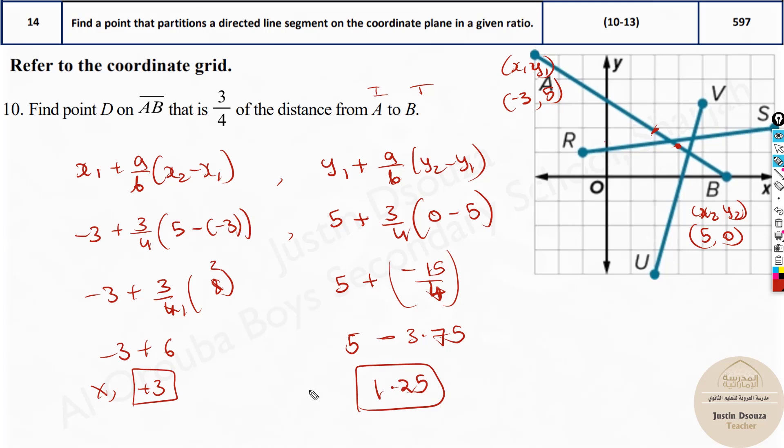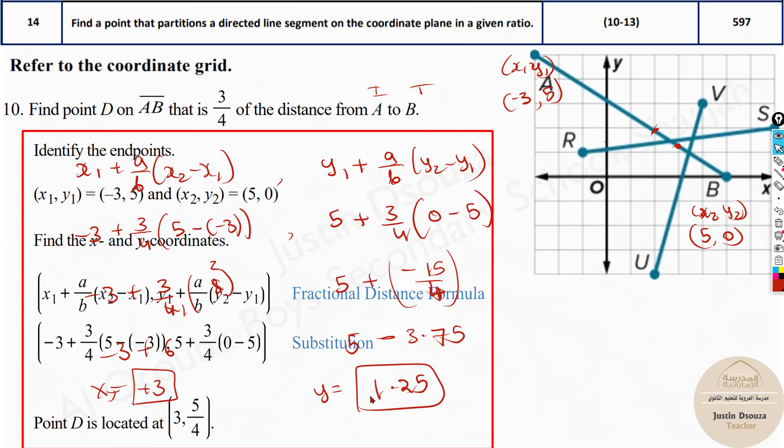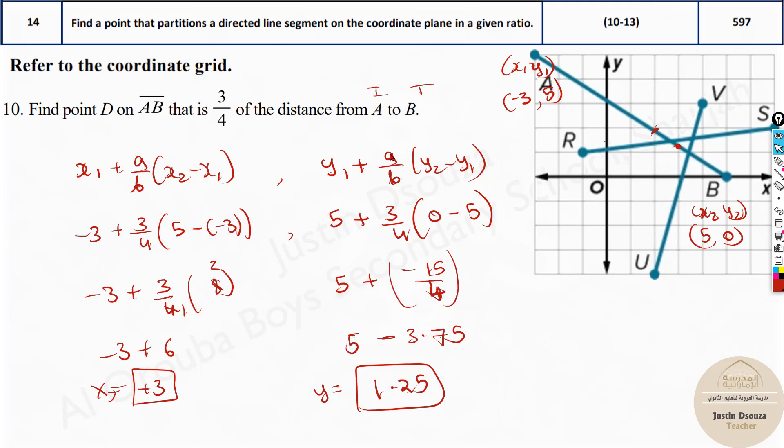This is the X value, that's the Y value. So this is how we solve whenever we get a fractional distance in coordinate plane. If you do it in calculator you'll get directly 5/4. You don't need to do all these steps. Only the substitution and then directly in calculator you get the answers.